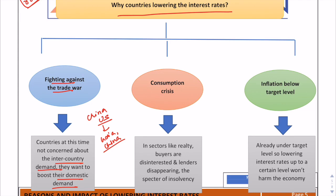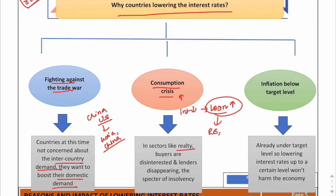The next reason is consumption crisis. In sectors like realty, builders are in a situation where there is no buyer, so they don't know whether to complete the project or not. Reduced interest rates will help boost demand in such sectors. As interest rates get lower, it entices people to take loans, increasing the demand for loanable funds, which are then used to invest in productive assets like real estate and machinery.